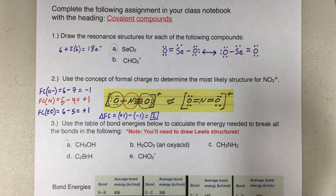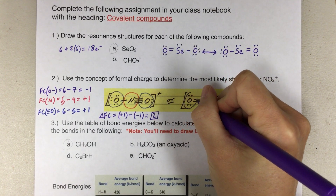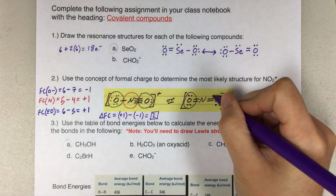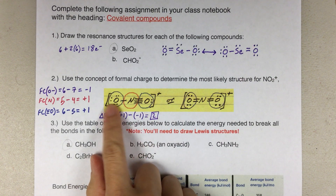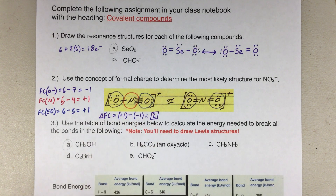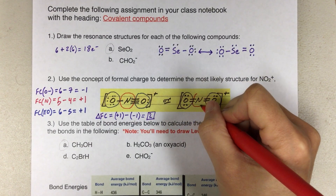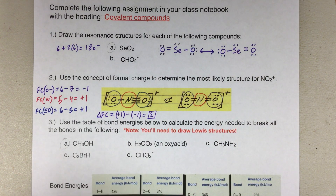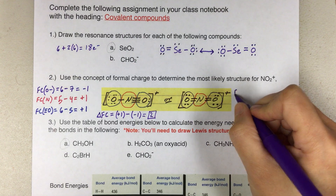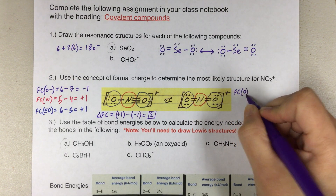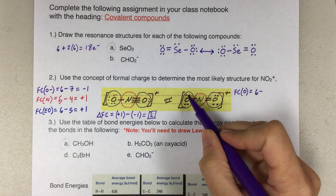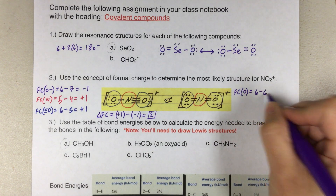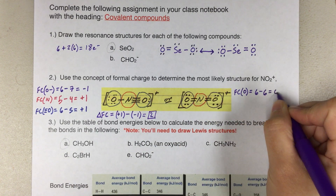Now let's calculate individual formal charges for the second Lewis structure. I'll draw circles around each atom. Notice that the two oxygens here are identical, so we only need one formal charge calculation for oxygen this time — unlike before where the oxygens were in different environments. Formal charge of oxygen: 6 valence electrons minus the 6 electrons it possesses in this structure equals zero.